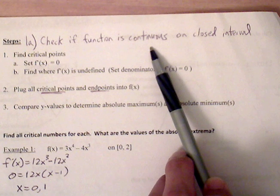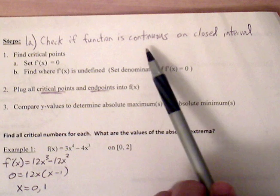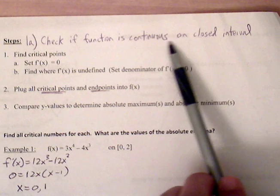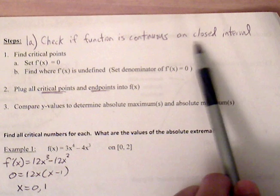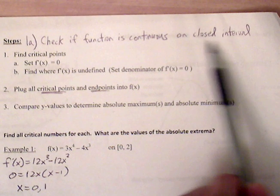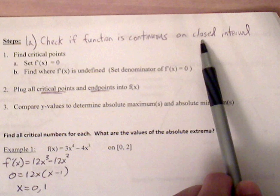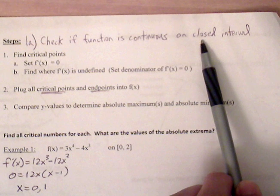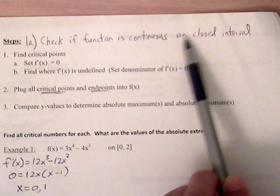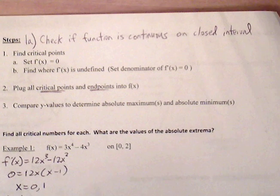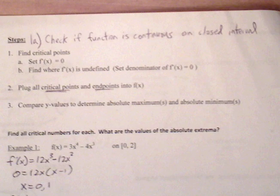Even though there is a vertical asymptote in the graph, we still want to test and see if it's going to affect our closed interval. If it doesn't affect the closed interval, then we can continue with the Extreme Value Theorem.